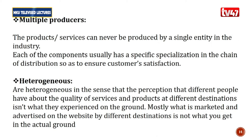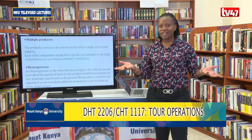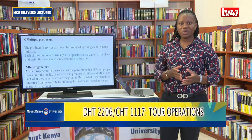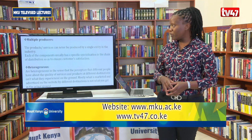Next is heterogeneity. Tourism products and services are heterogeneous in the sense that what is marketed on websites about different destinations is not always what the tourist gets on the actual day of visiting. For example, if a tourist visits a website for Kakamega National Reserve, they'll see very beautiful pictures of the services and accommodation facilities — but when they go on the ground, what was posted on the website may not match what they experience. Because of the marketing aspect, very beautiful pictures are posted to attract people, but the ground reality can differ.